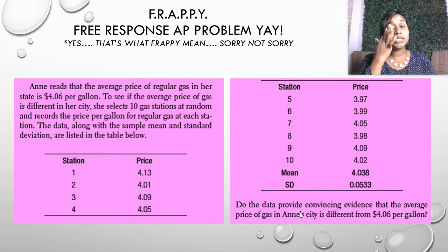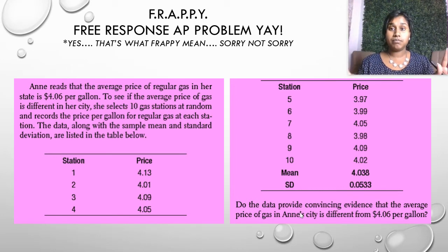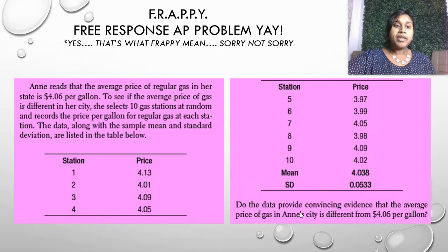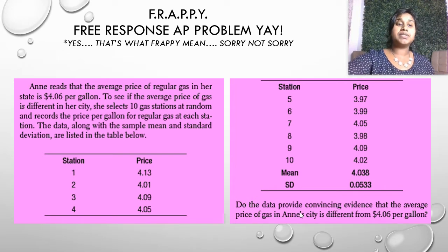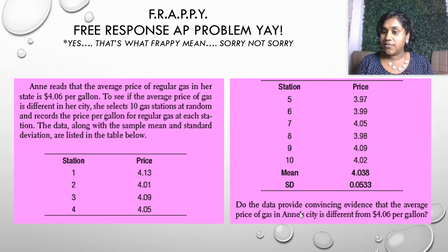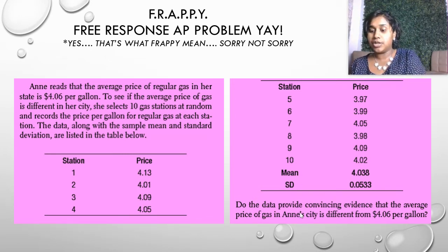With this question, there is no A, B, C, and D, so this is just the screen. Solutions are coming next. Anne reads that the average price of regular gas in her state is $4.06 per gallon. To see if the average price of gas is different in her city, she selects 10 gas stations at random and records the price per gallon for regular gas at each station. The data, along with the sample mean and standard deviation are listed in the table below. Do the data provide convincing evidence that the average price of gas in Anne's city is different from $4.06 per gallon?